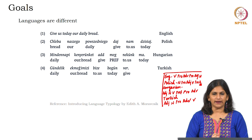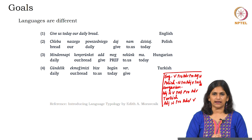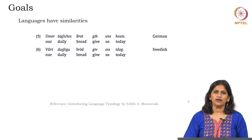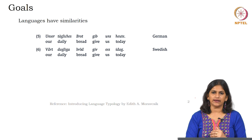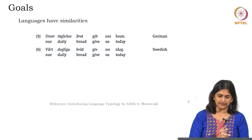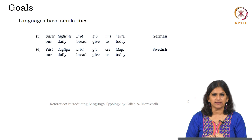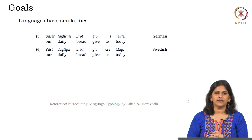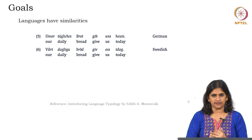Now let us find out if there is any similarity between any languages. The next set of data — from German and Swedish, again from Moravcsik's book Introducing Language Typology by Cambridge University Press — shows similarities more than differences, at least as far as word order is concerned. Get a copy of the book if possible, so you can explore more about linguistic typology on your own.